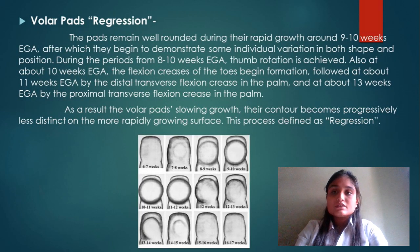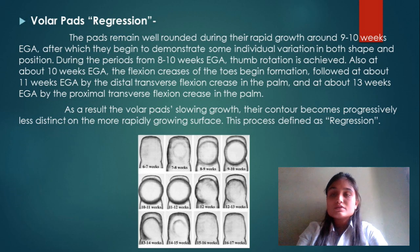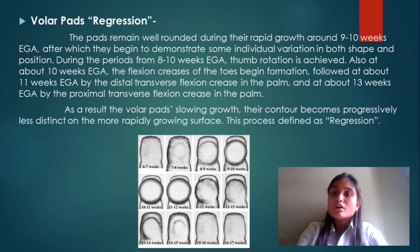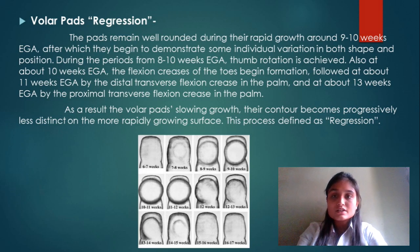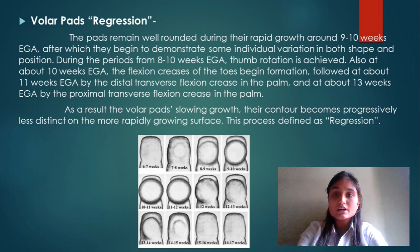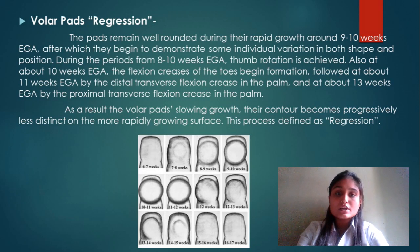Volar pad regression: the pads remain well-rounded during their rapid growth around 9 to 10 weeks EGA, after which they begin to demonstrate some individual variation in pad shape and position. From 8 to 10 weeks EGA, thumb rotation is achieved. At about 10 weeks EGA the flexion creases of the toes begin formation, followed by the distal transverse flexion creases in the palm at about 11 weeks EGA, and by the proximal transverse flexion creases at about 13 weeks EGA.